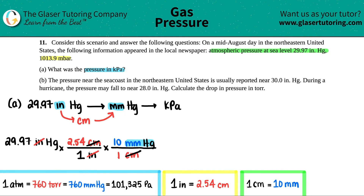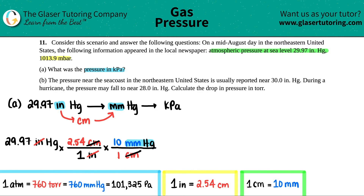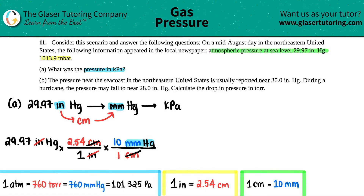We don't want to round until the very end, so keep going. From millimeters of mercury we can get to kilopascals. The conversion is 101,325 pascal per 760 mmHg. To go from pascals to kilopascals — just like grams to kilograms — you divide by 1000. So 101,325 Pa becomes 101.325 kilopascal.